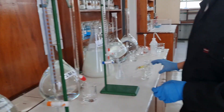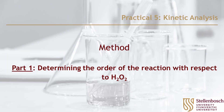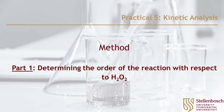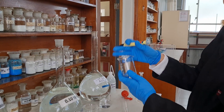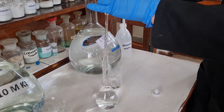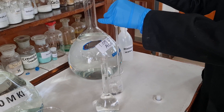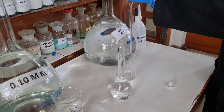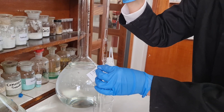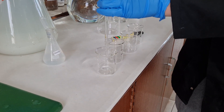Each pair of students will be required to accurately record the time between the addition and the sudden color change. Record the temperature of the laboratory as accurately as possible. Part 1 involves the determination of the order of the reaction with respect to the hydrogen peroxide. Firstly, label four clean, dry 100 milliliter beakers as beakers one to four. Rinse the 10 milliliter pipette with two small portions of H₂SO₄ solution; each of these small portions should be discarded in the appropriate waste bins. Use the 10 milliliter pipette to add the required volume of H₂SO₄ into each beaker. These volumes can be found in Table 1.